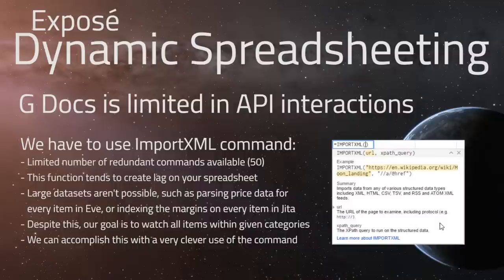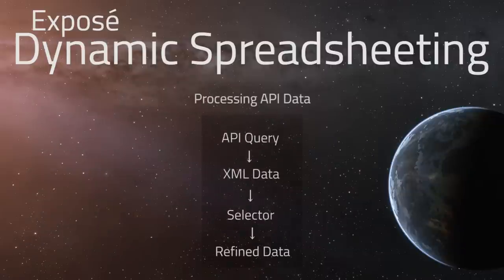For example, if someone goes to market and buys out all the Cerberus hulls, we want to see that spike come up highlighted on our spreadsheet — an opportunity to enter the market as a producer. This wouldn't be possible entirely on Google Documents without some helper function or scripting as a background technology.